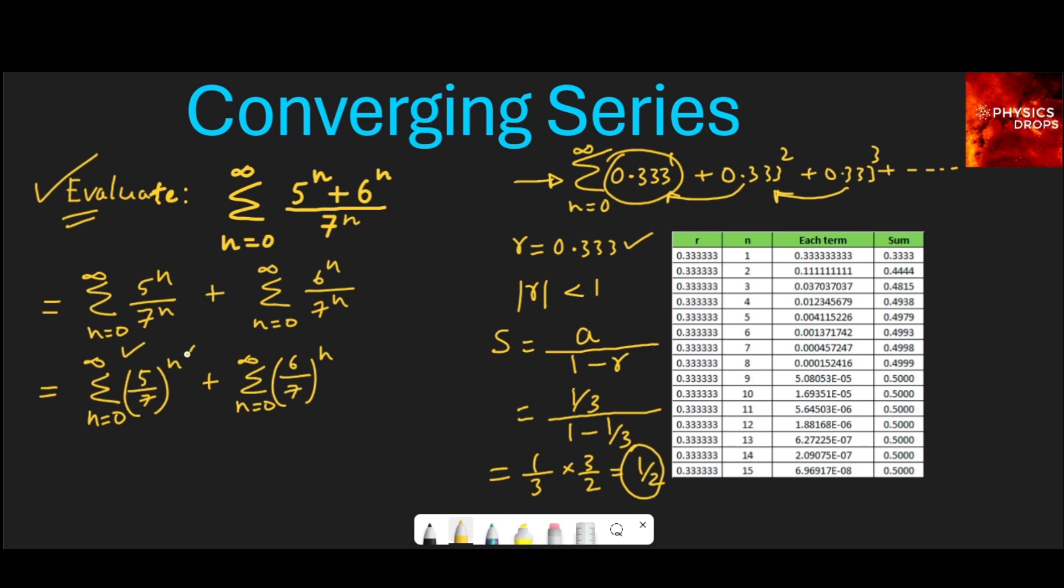Then if we substitute a value of 0 for n, we get the first term. Anything to the power of 0 is 1, so a in this case is 1. Similarly for the second term, a is 1. So the first term will be 1.